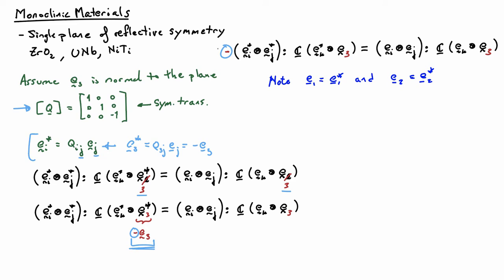That will tell me, for example, that C1123 is equal to minus C1123. This is in the unstarred basis, just in the regular Ei basis.